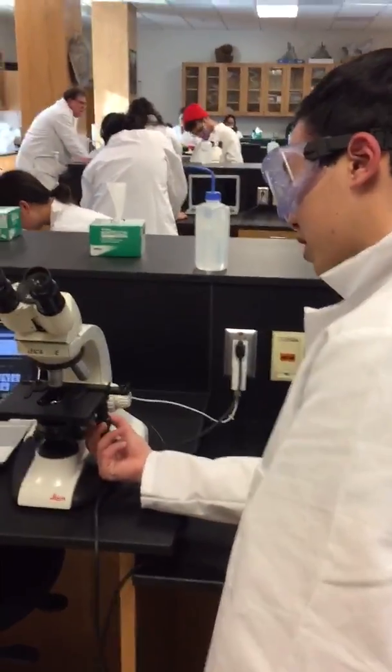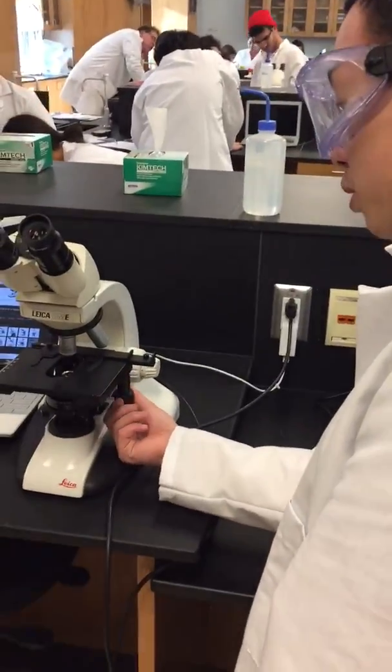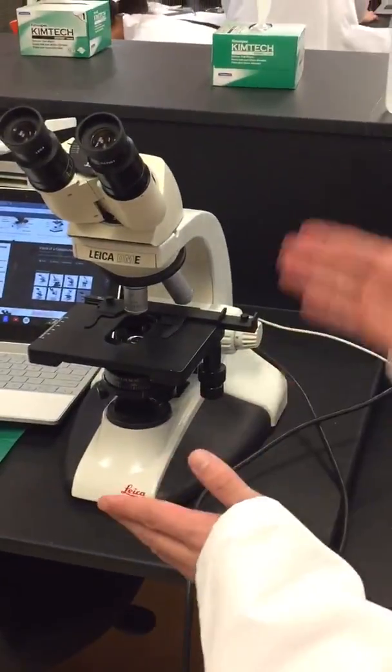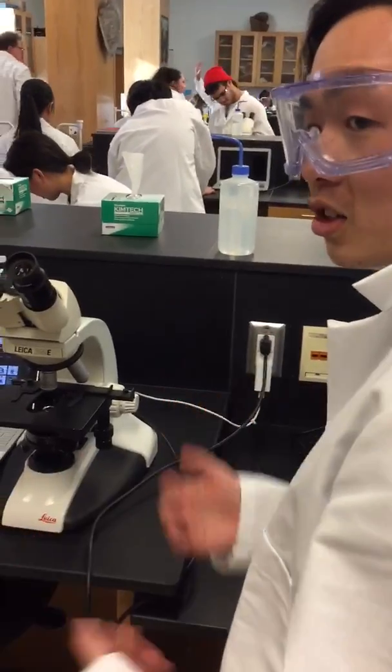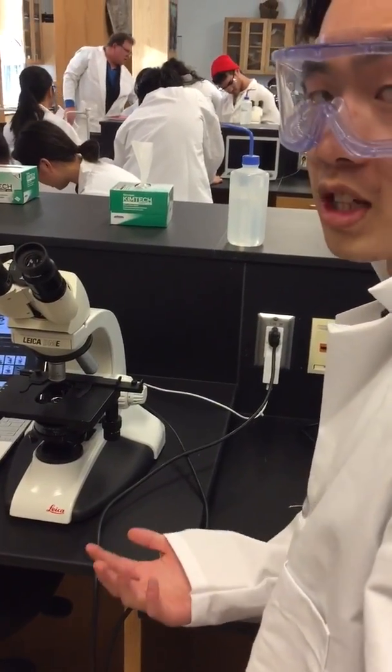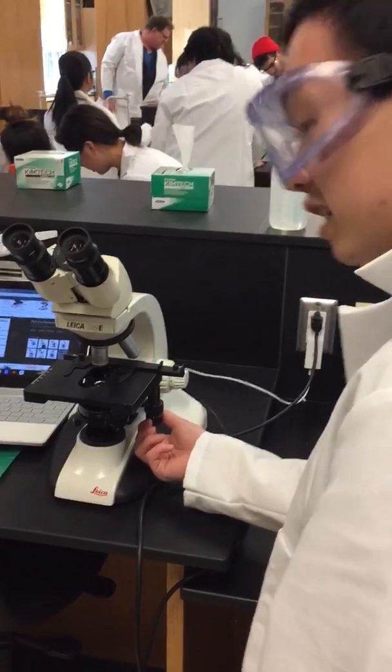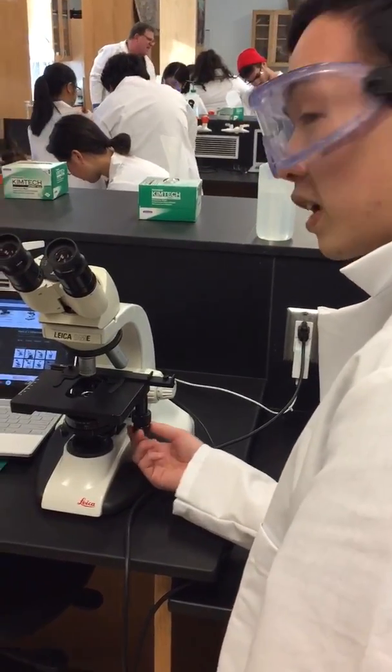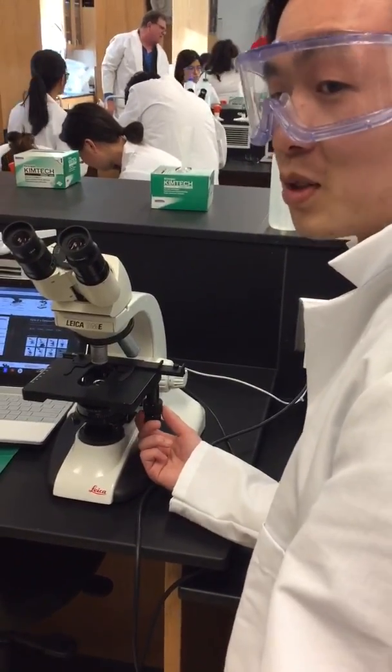The top knob here moves the sample back and forth so you could adjust and look for certain microbes within your specimen, and this bottom knob here moves it left to right which also helps you look for your specimen.